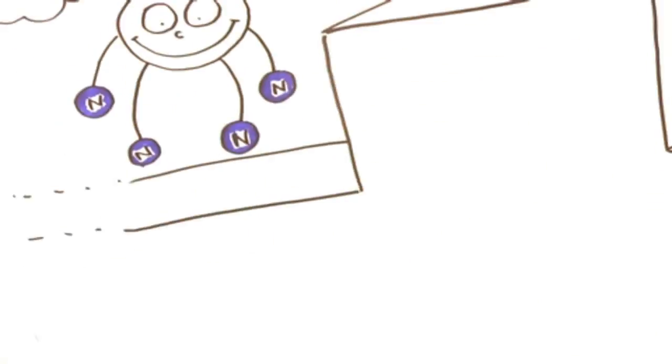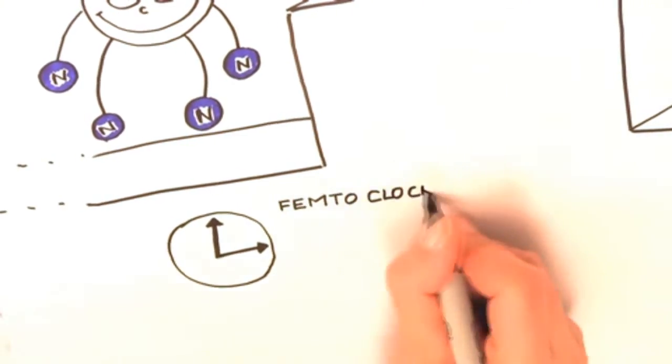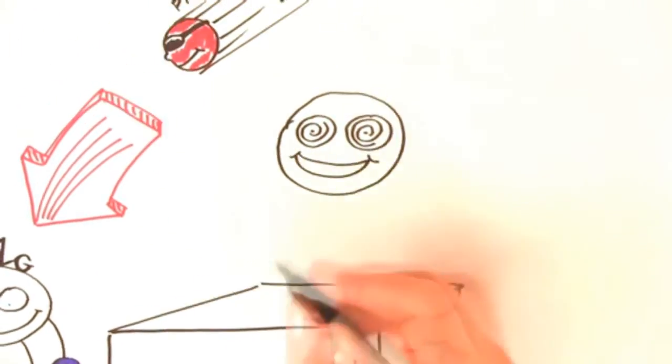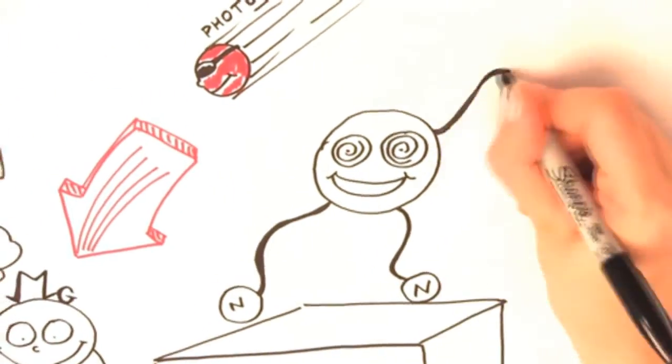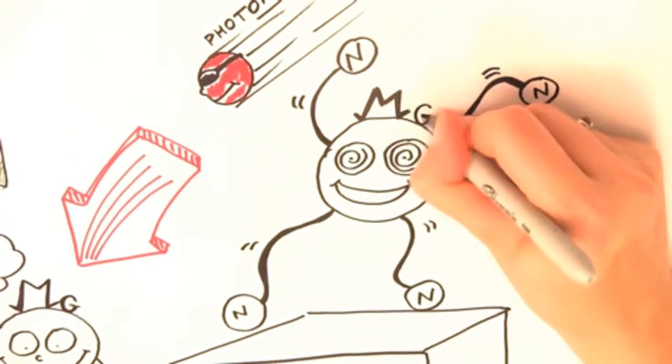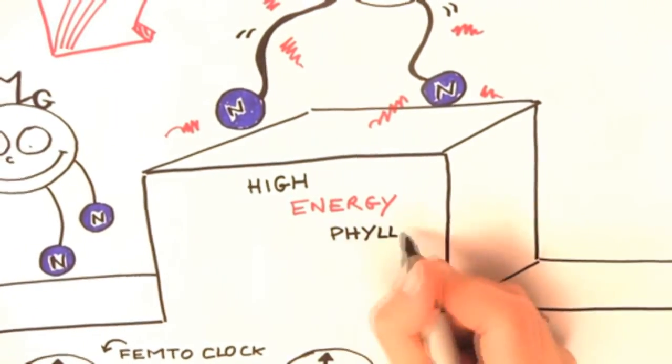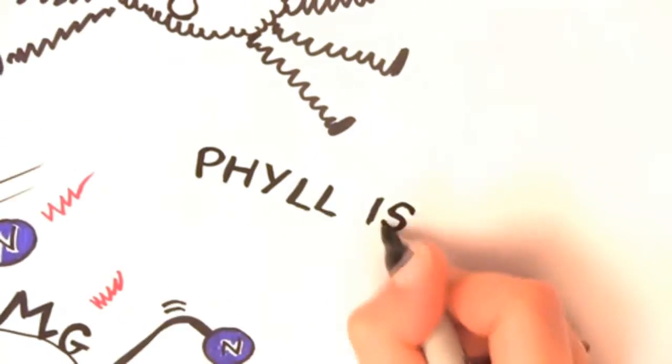The electrons making up Phil's bonds get excited, creating a higher energy Phil. This happens in femtoseconds, one billion millionth of a second. This excitation of a molecule is called an exciton.